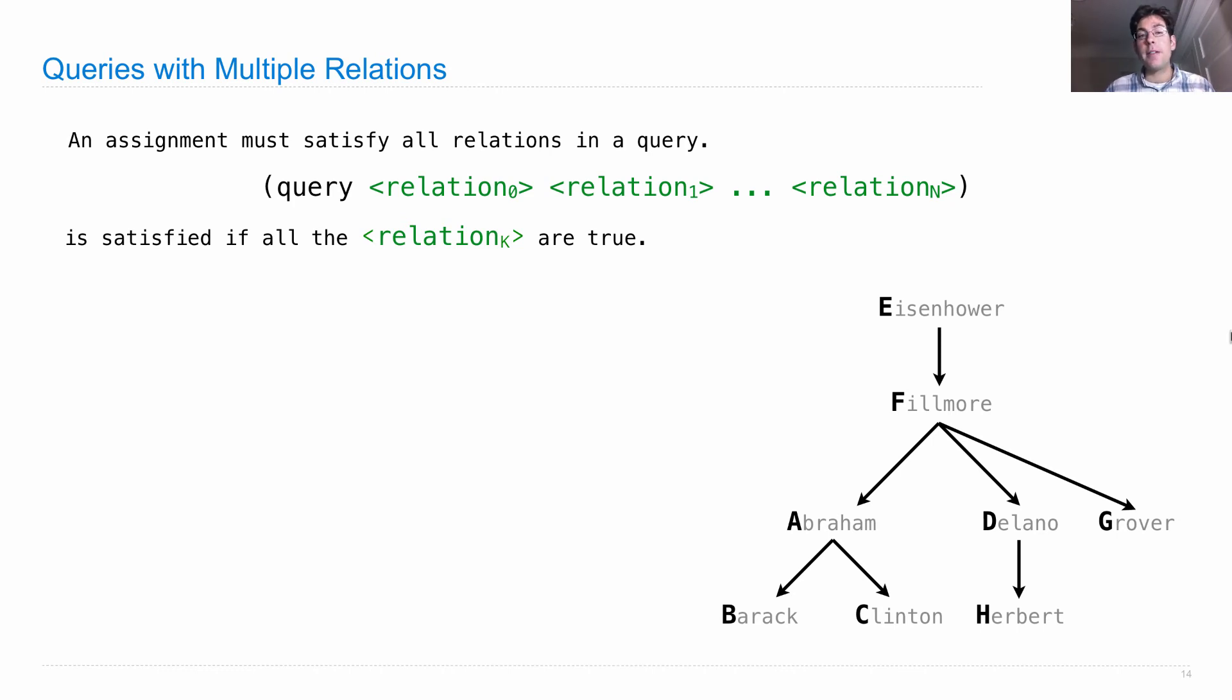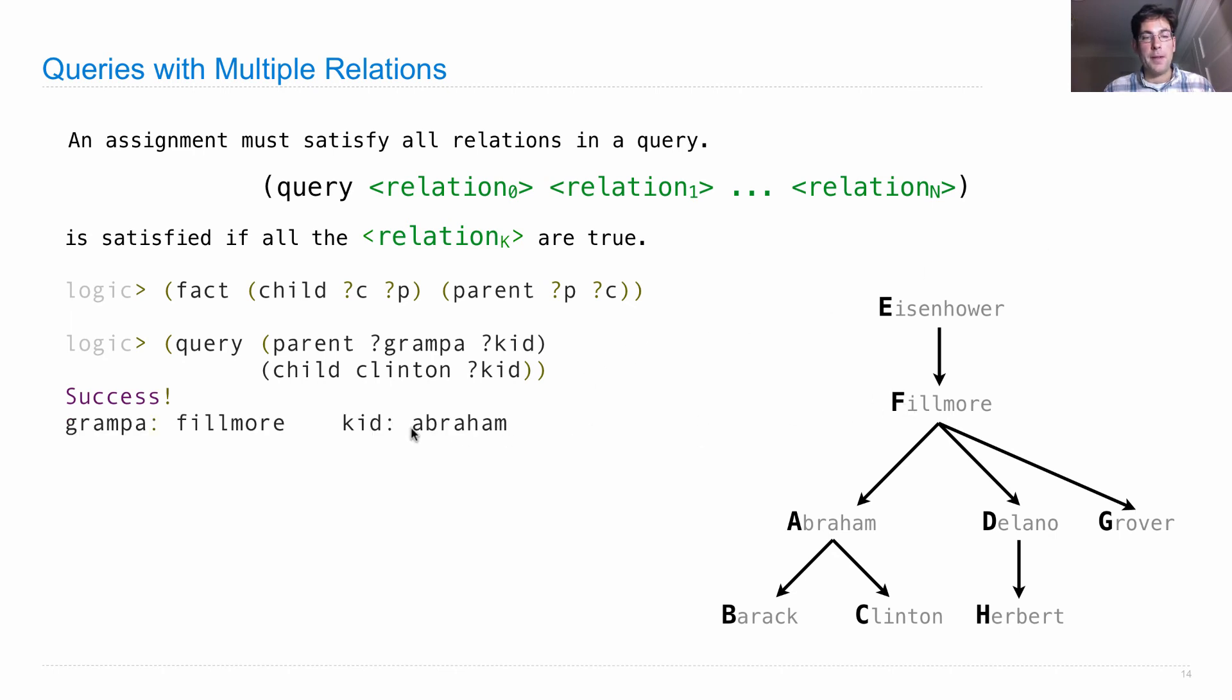We only get one assignment through each variable. If I write down this fact, and then I issue a query which has two lines. It says, there must be a parent relation between Grandpa and some kid, and a child relation between Clinton and that kid. Clinton's the child of some kid, whose parent is the Grandpa. Is there such an assignment to Kid and Grandpa? Well, yes, there is. The grandpa's Fillmore. The kid is Abraham. And child Clinton, Abraham is true. And parent Fillmore, Abraham is also true. These are both satisfied at the same time, which means that we've satisfied the entire query.